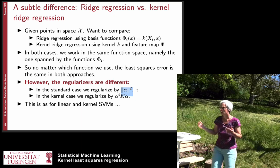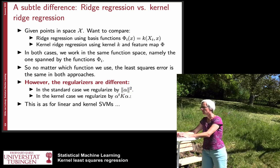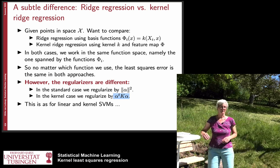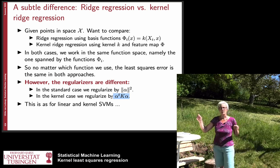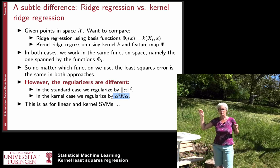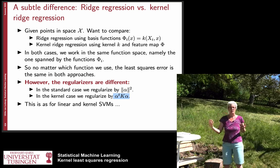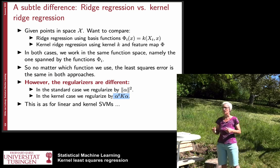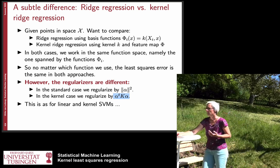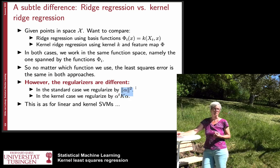Now in the kernel version we regularize by the norm in the feature space. So we first do this transformation and then the norm is directly taken in the feature space. And this interpretation didn't exist in the previous version when we derived it at the beginning of the semester. And this norm in the feature space is alpha transposed k alpha whereas this here would just be alpha transposed times alpha.